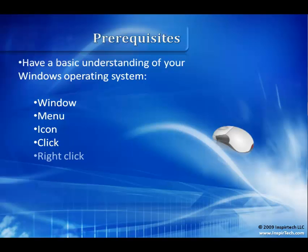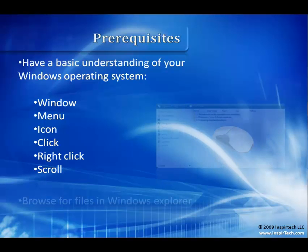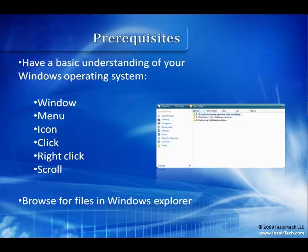Similarly, if you're asked to right click, that means click the right mouse button. When asked to scroll, use the scroll wheel between the left and right mouse buttons. You should also know how to use Windows Explorer to find files on your computer, as this will differ based on your operating system.